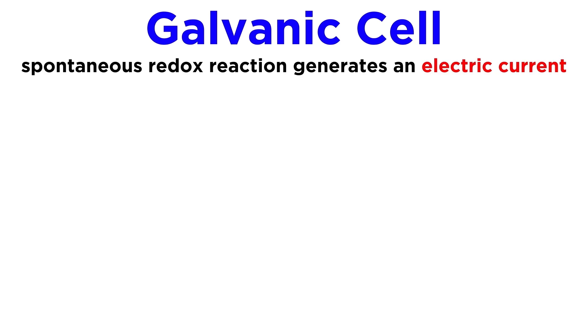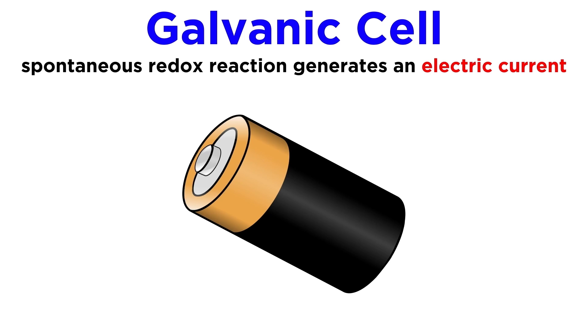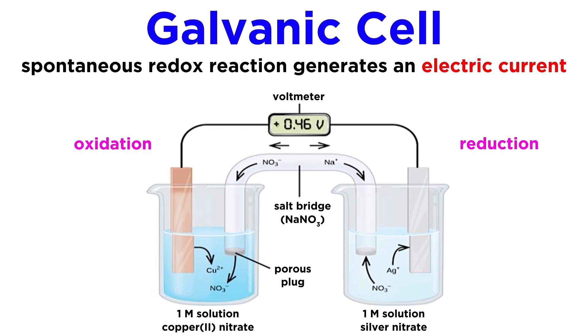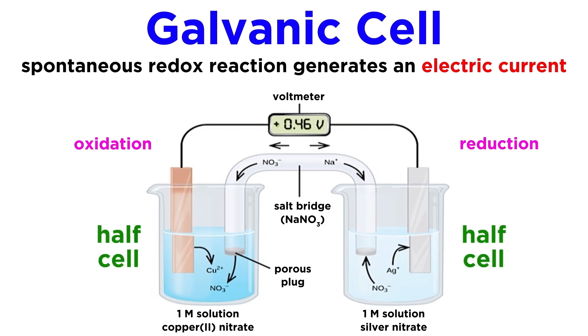A galvanic cell, also called a voltaic cell, is a kind of electrochemical cell in which a spontaneous redox reaction is used to generate an electric current, and we can harvest that electrical energy for our own purposes, such as in a battery. In a galvanic cell such as this one, the oxidation half-reaction and reduction half-reaction are physically separated so that the resulting current can flow through an external wire. Each beaker is called a half-cell, and each half-cell will have a metal electrode. The one made of the metal to be oxidized — in this case copper — is called the anode.